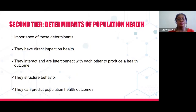The importance of the social determinants of health is that they have a direct impact on our health. They can interact and are interconnected with each other to produce a health outcome. They structure behavior and can predict population health outcomes.